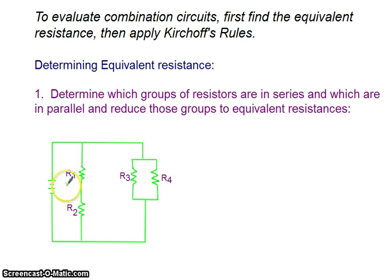R1 and R2 are a simple series connection. R3 and R4 are a simple parallel connection. So what we would do is first combine R1 and R2, separately combine R3 and R4, and then proceed from there.